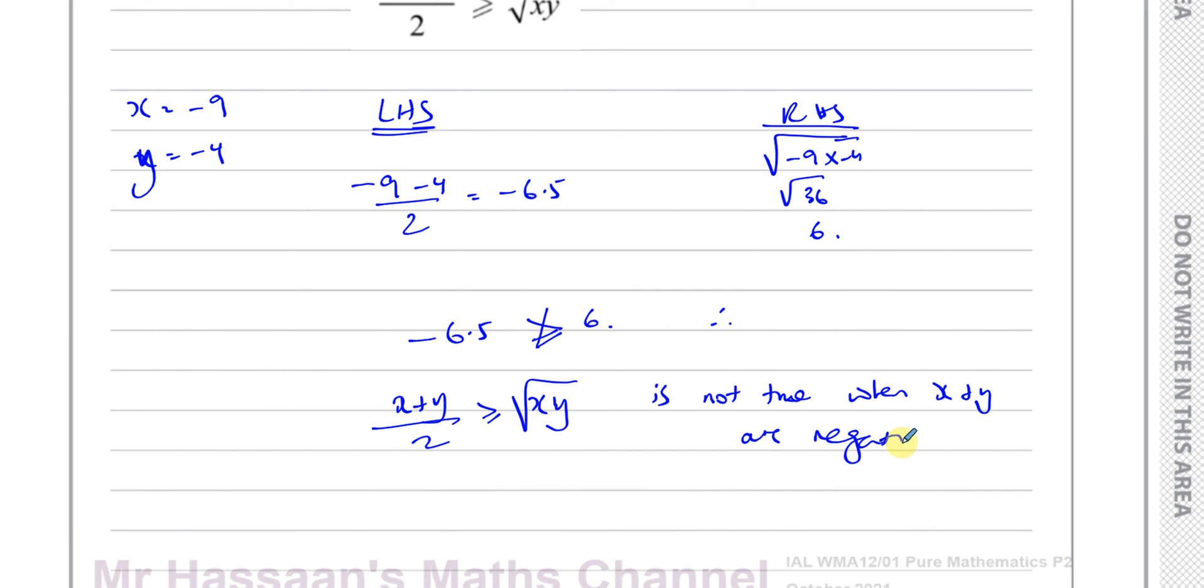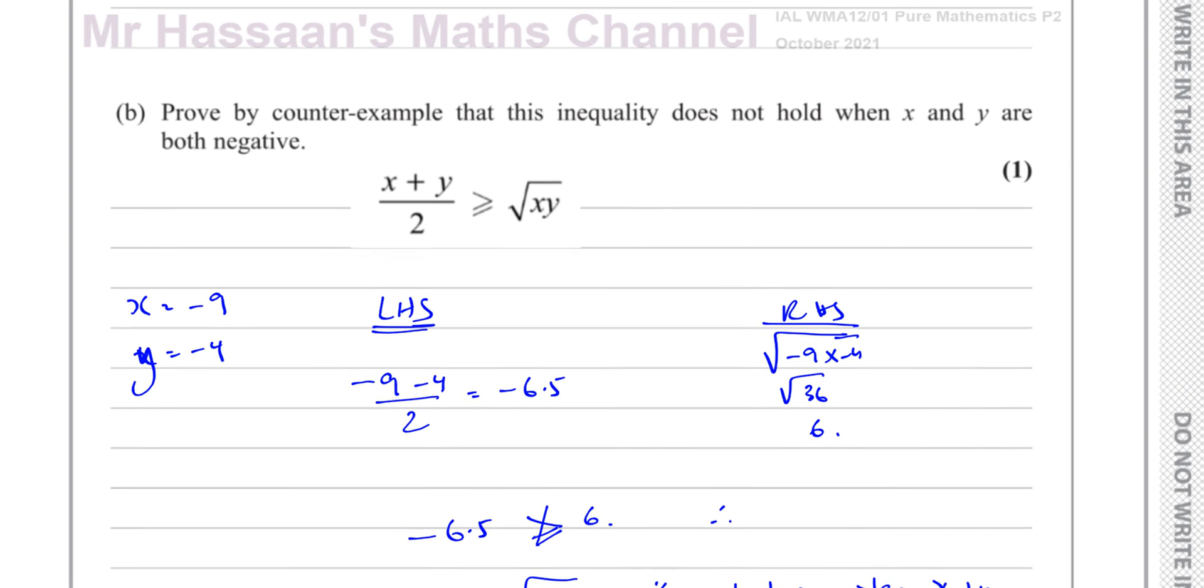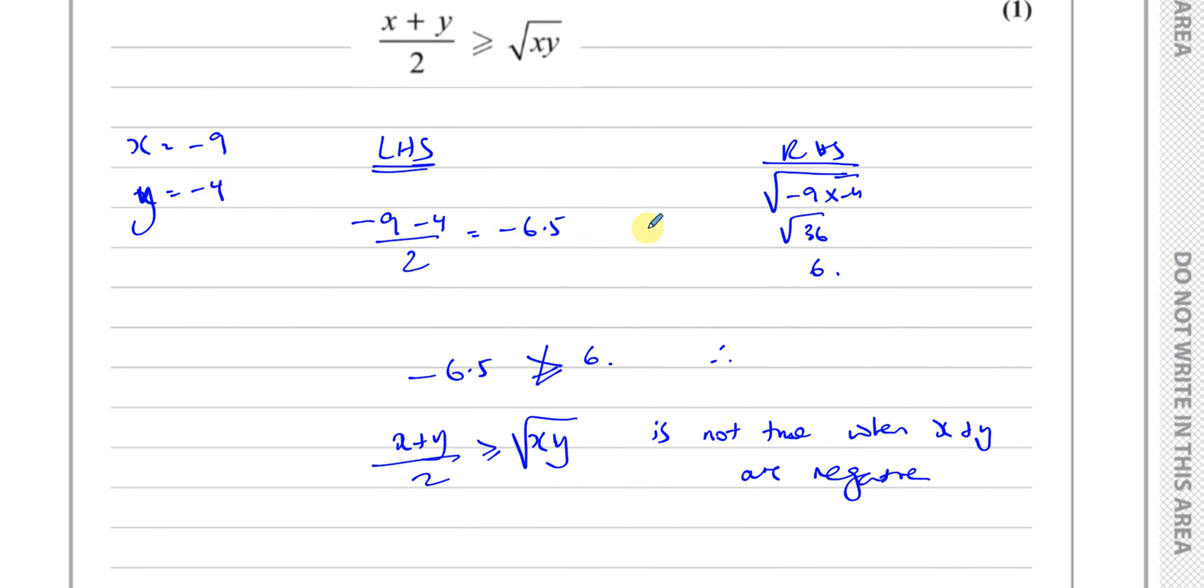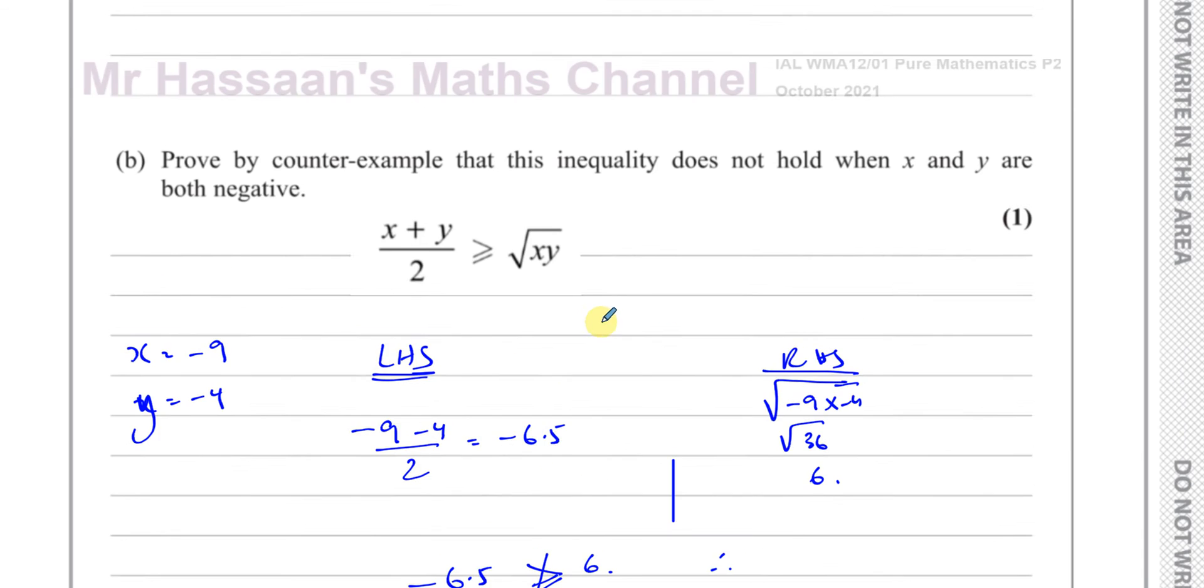When x and y are negative. You should make a statement like that. And we've shown that by one counter example. You have to show one example that proves it to be false. And we did. We chose the value of x and y, which proves the inequality to be false. And that's the end of this question.